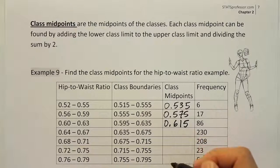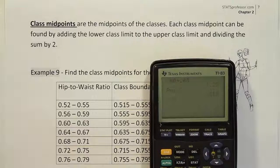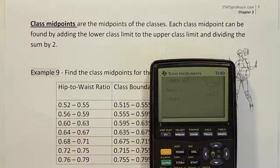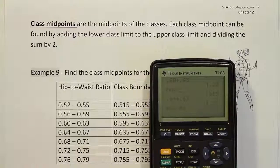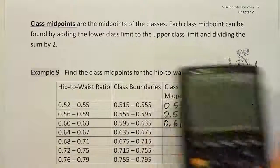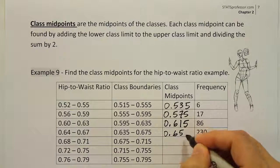And we would continue on down the line doing that. Let's just do one more together. So we'll have .64 added to .67, and then we divide the sum by 2. Alright, when we're done we get .655. So 0.655.